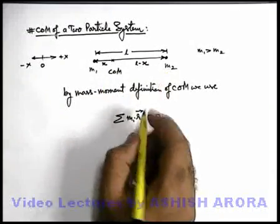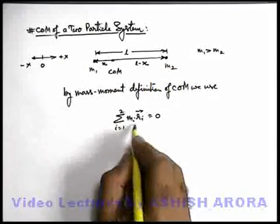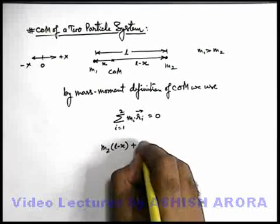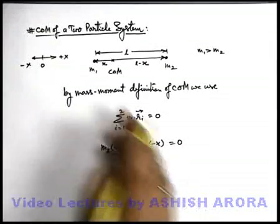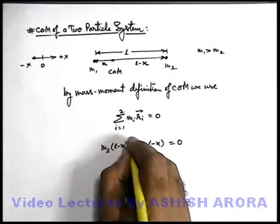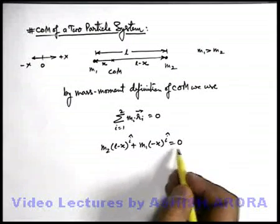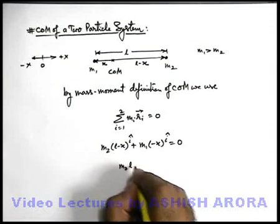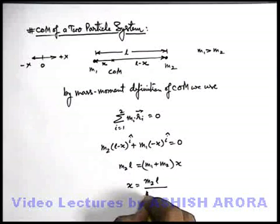By mass moment definition of centre of mass, we use summation of m_i × r_i vector equal to zero. In this situation there are two particles, so for i equal to 1 to 2: the mass moment of m2 is m2 × (l − x), plus the mass moment of m1 is m1 × (−x), and this should equal zero. The minus x is because m1 is in the negative x direction. Since the other side of the equation is zero, there is no need to write unit vectors explicitly.